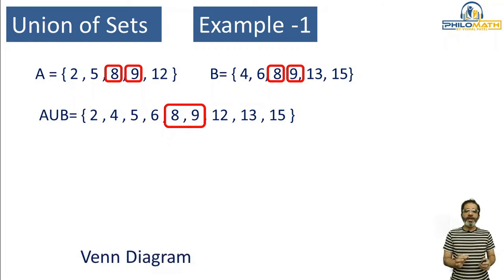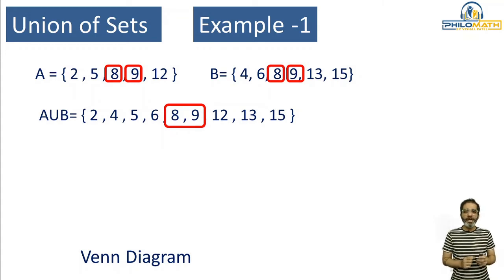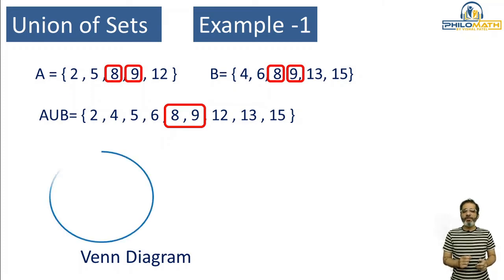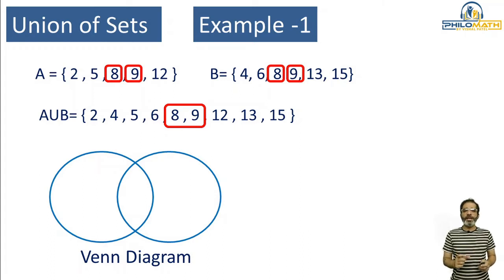Now let's see how we draw the Venn diagram of A union B. In A union B there are certain elements which are common from A as well as B — that is elements 8 and 9. So when I draw the Venn diagram, I will draw two circles intersecting each other. Why intersecting? Because at the point of intersection we are going to write down the common elements.